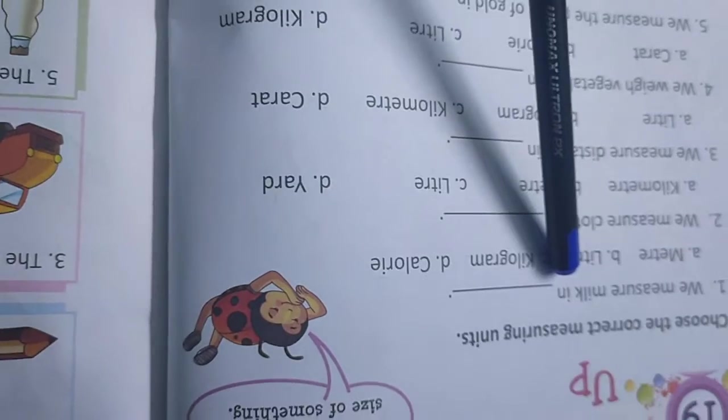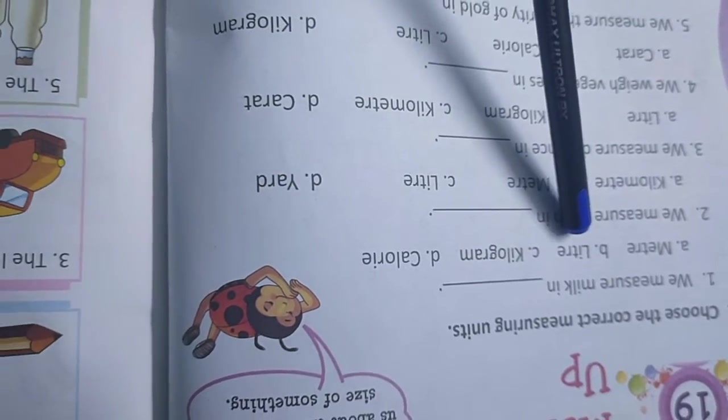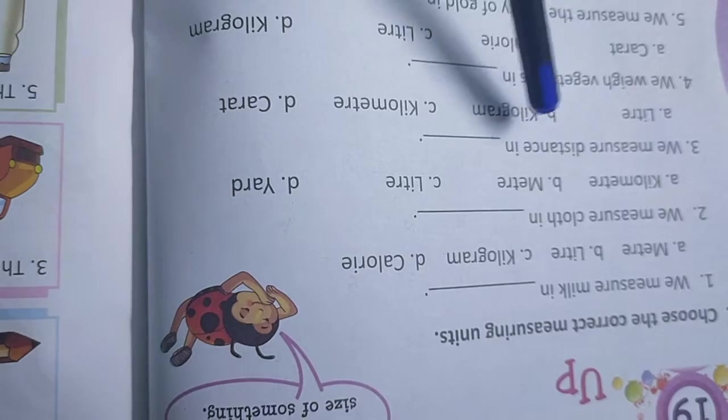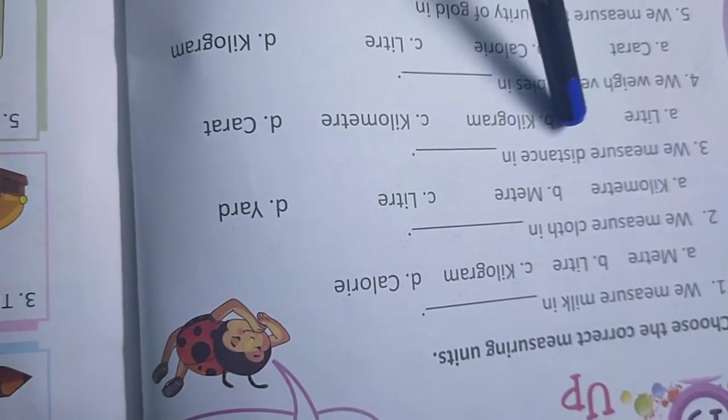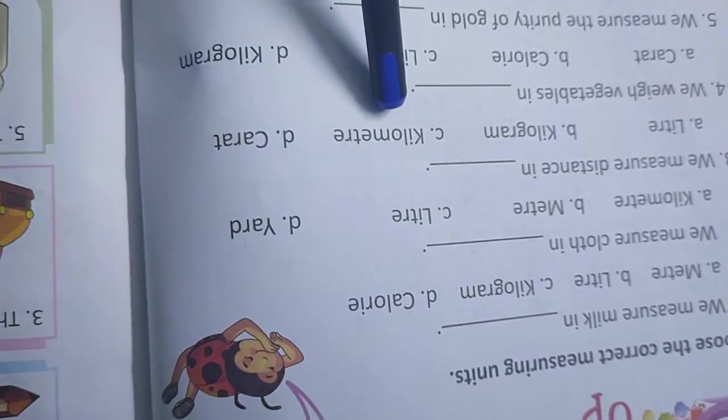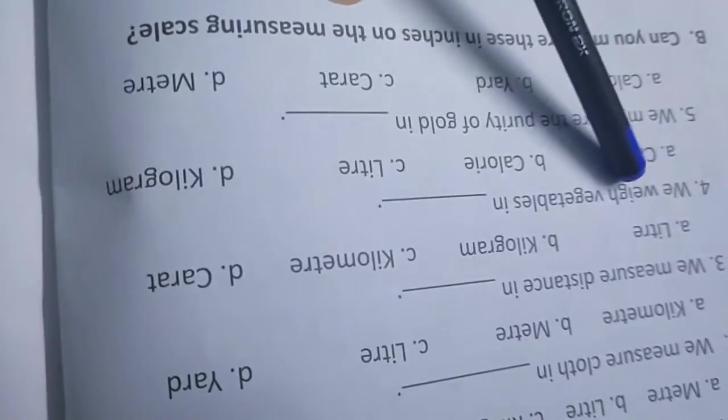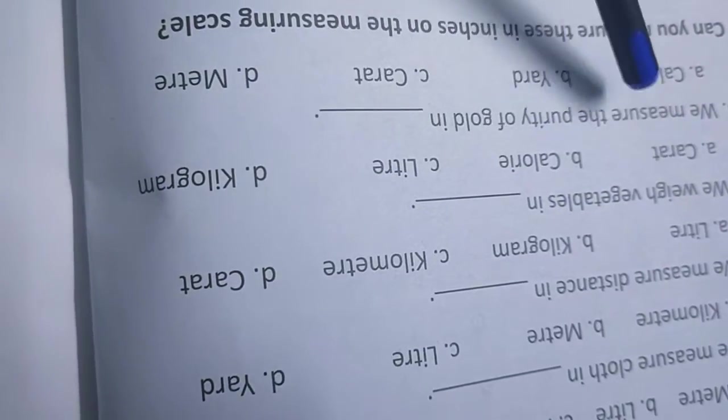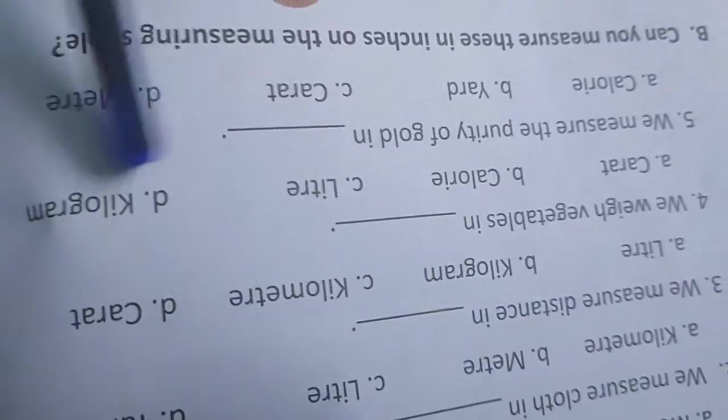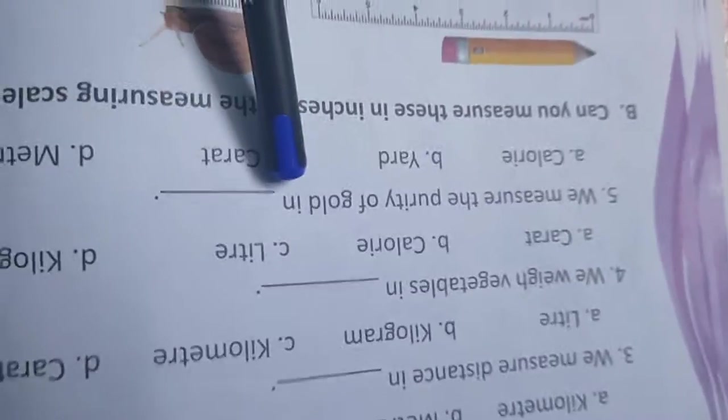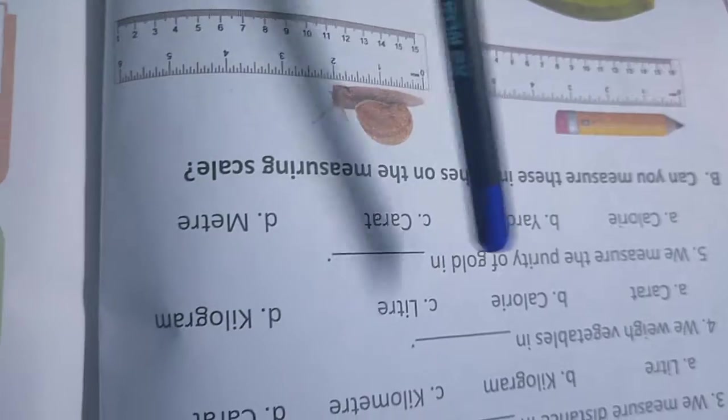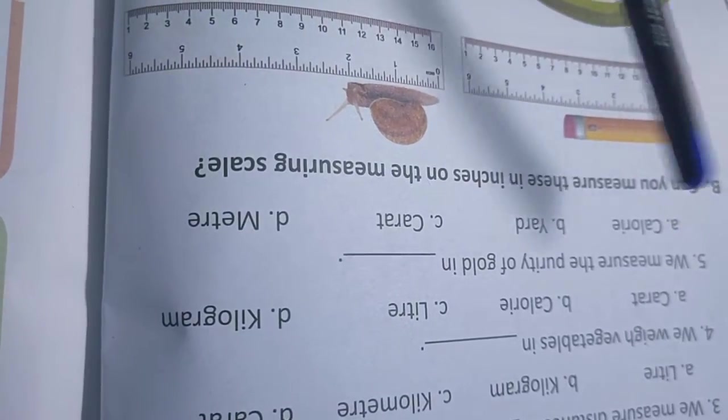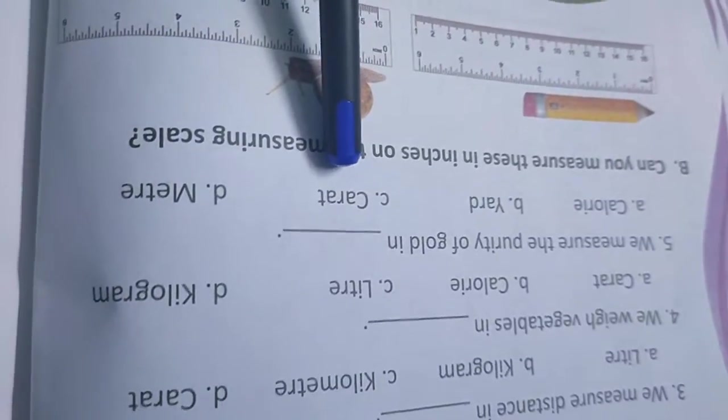Here is the question. We measure milk, that means liquid, liter. We measure cloth, that means length, meter. We measure distance, kilometer, long distance. We weigh vegetables, that means weight, it is kilogram. We measure the purity of gold. Gold is measured by milligram, but purity, that means carat, 14 carat, etc.